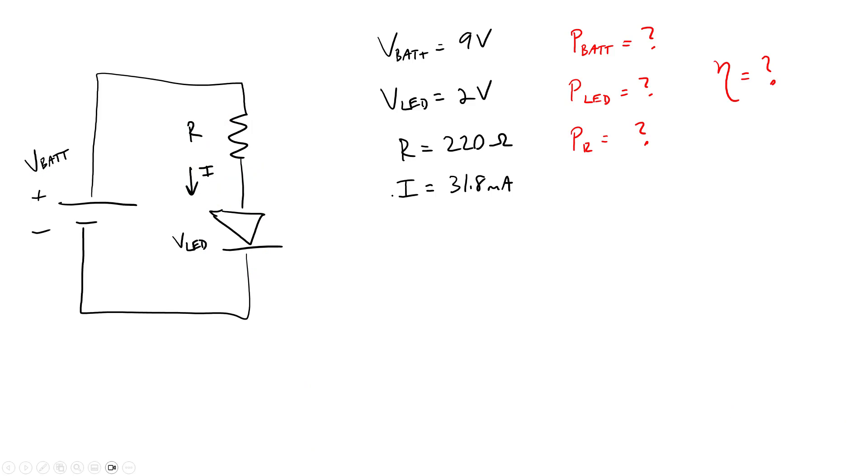We're going to use our example circuit from the previous video, where we already know the values. We have a battery voltage of 9 volts, an LED voltage drop of 2 volts, a resistor value of 220 ohms, and a current of 31.8 milliamps. If you want to see where all those values came from, you need to go check out the other videos linked in the description of this one.